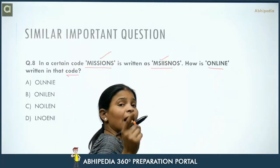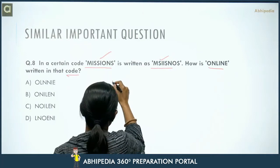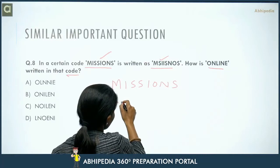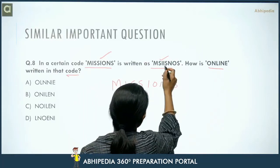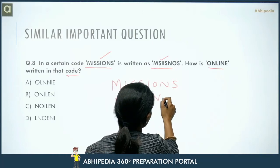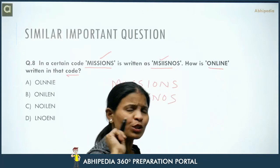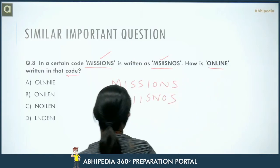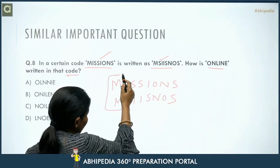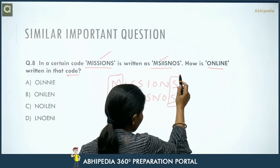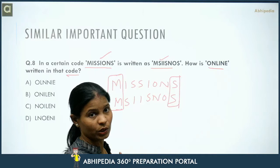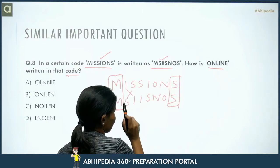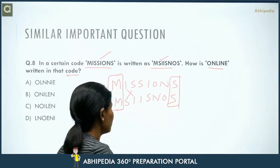Looking at the logic: the letters are the same — no new letters, just position changes. The first and last letters stay at the same position. The middle letters are exchanging in pairs: I and S swap, S and I swap. So two-two letters are swapping positions.